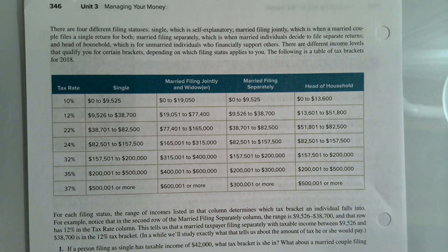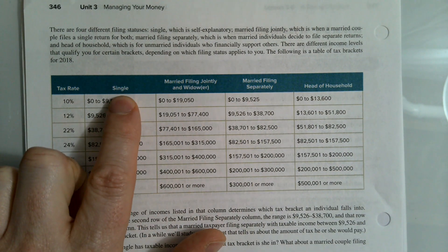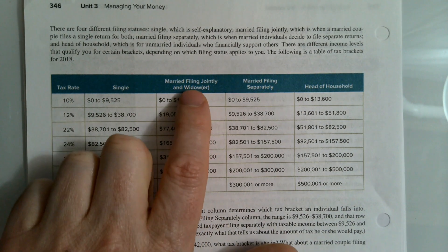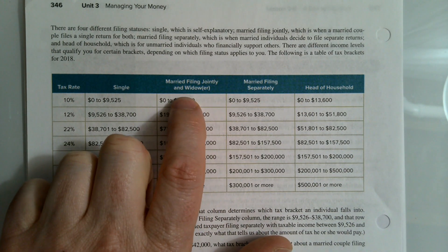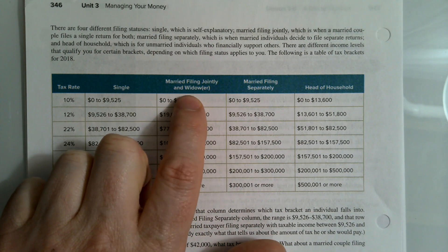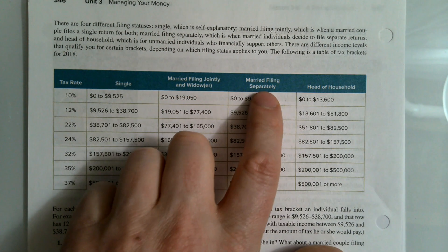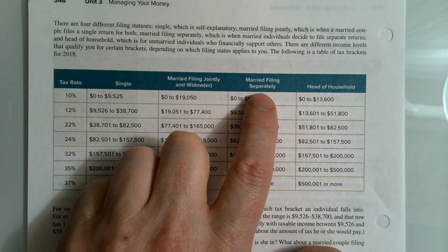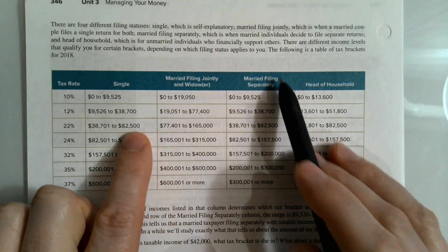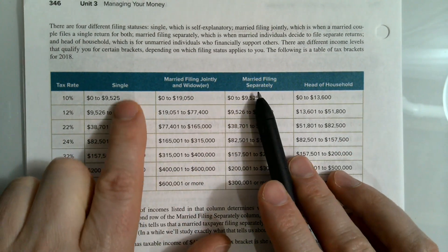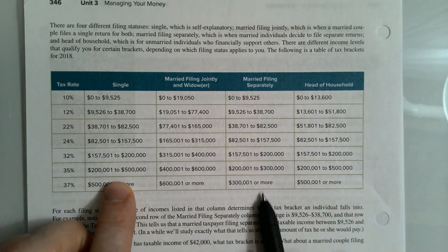In the table you'll see four different filing statuses. You can file as a single person. If you are legally married, you can file jointly, or if your spouse is no longer alive, you can file as a widower. If you are married but don't want to file together, you can file as married filing separately.